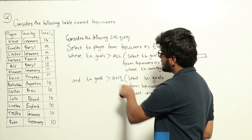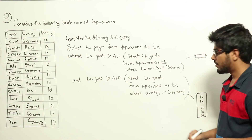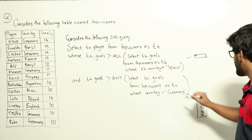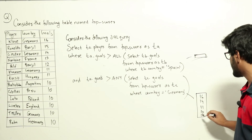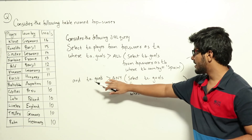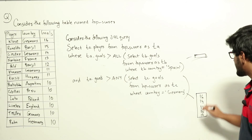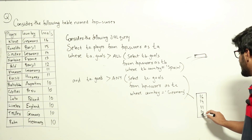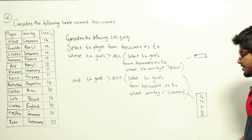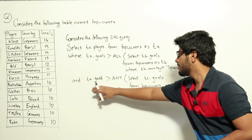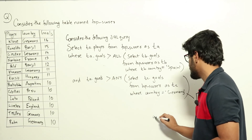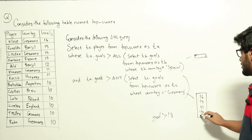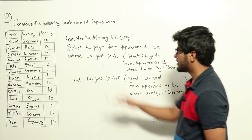Now for the second condition: ta.goals > ANY of {16, 14, 11, 10, 10}. Greater than ANY means the goal should be greater than at least one value in the list. The minimum in the set is 10, so the goal just needs to be greater than 10. This part will return true if the goal is greater than 10.